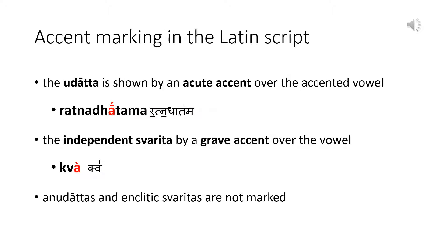Accent marking in the Latin script we use is quite simple. The udātta is shown by an acute accent over the accented vowel. The independent svarita is shown by a grave accent over the vowel. Anudāttas and enclitic svaritas are not marked.